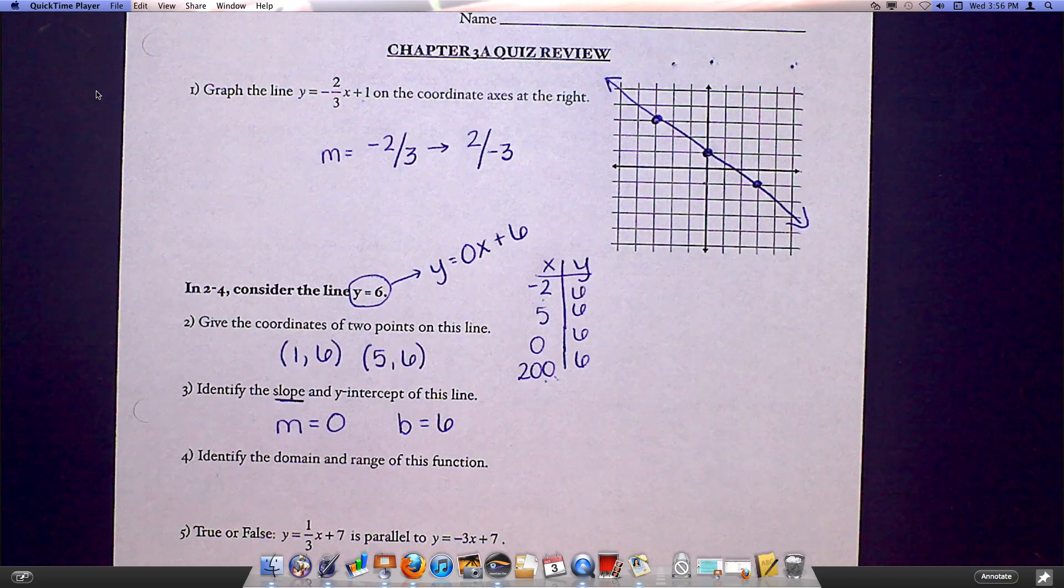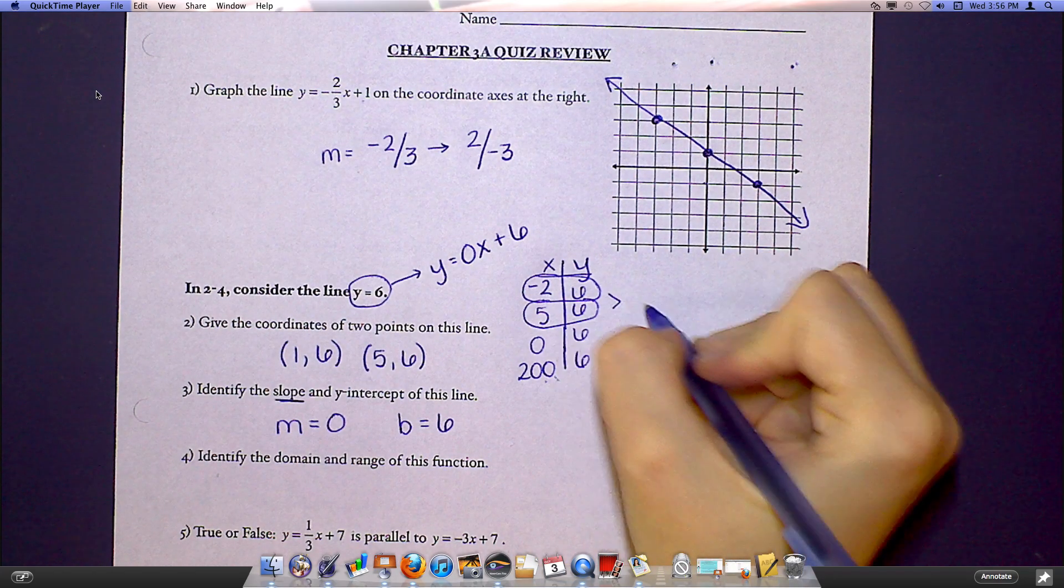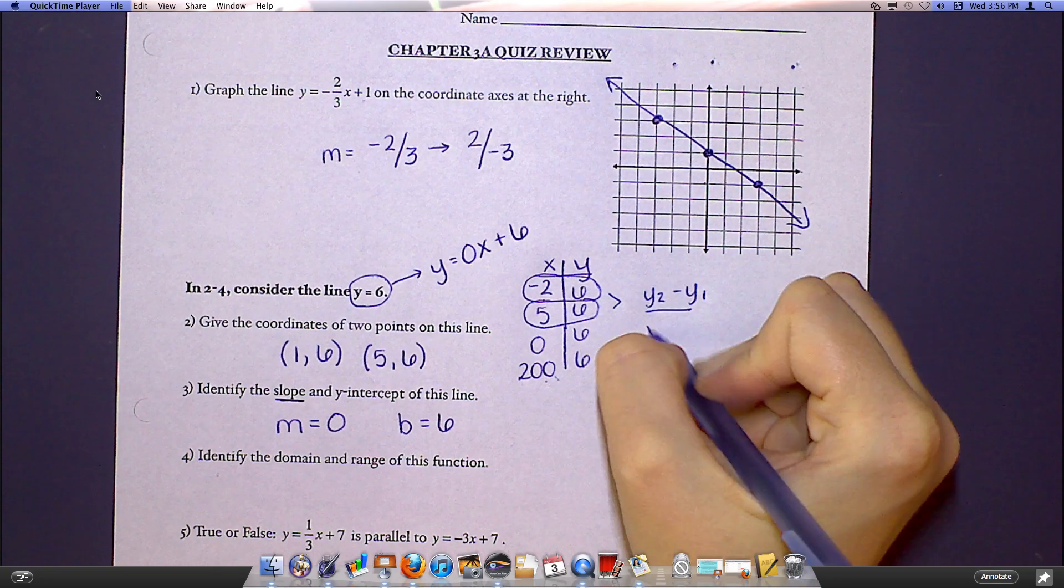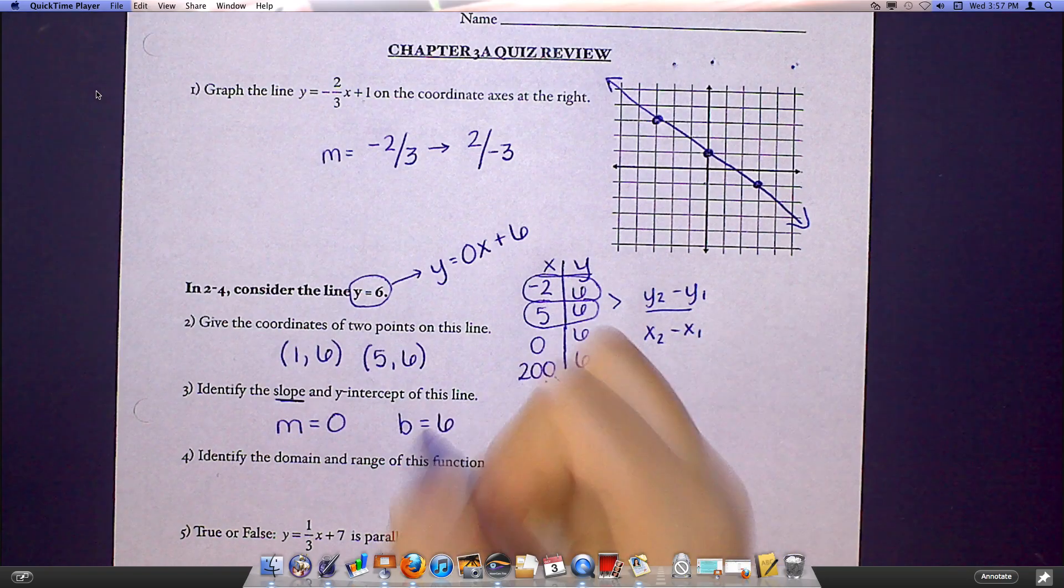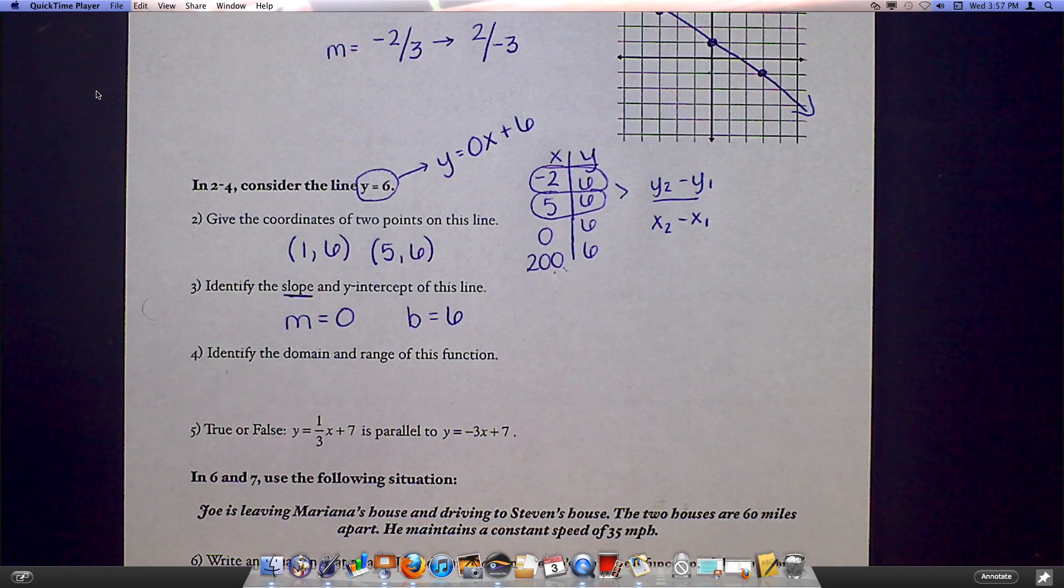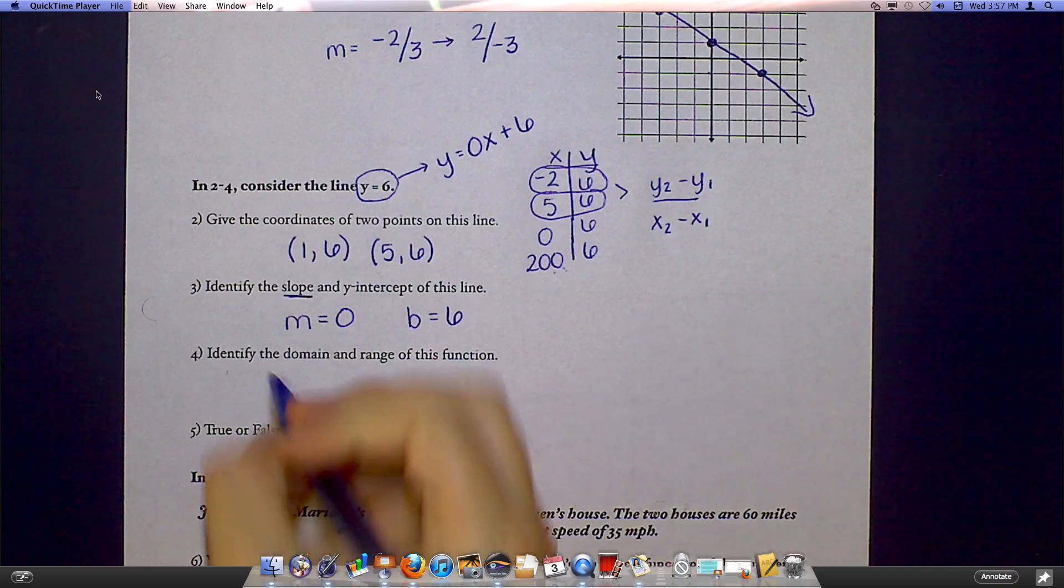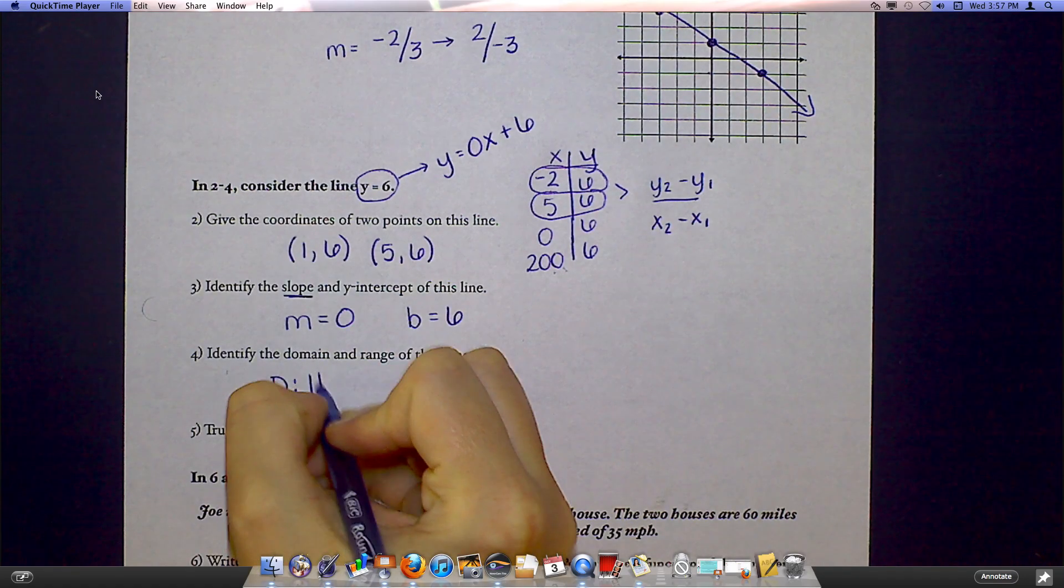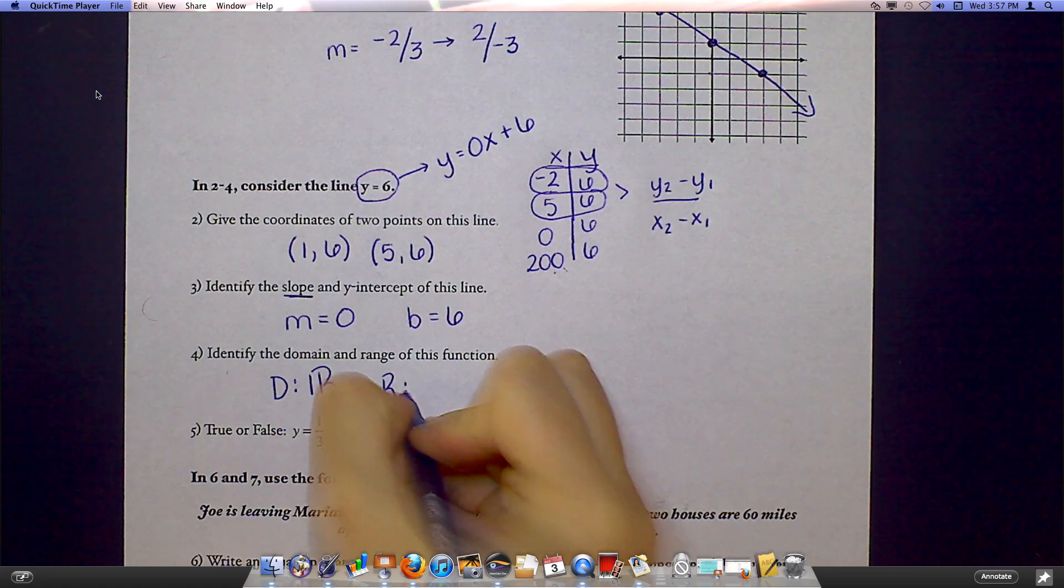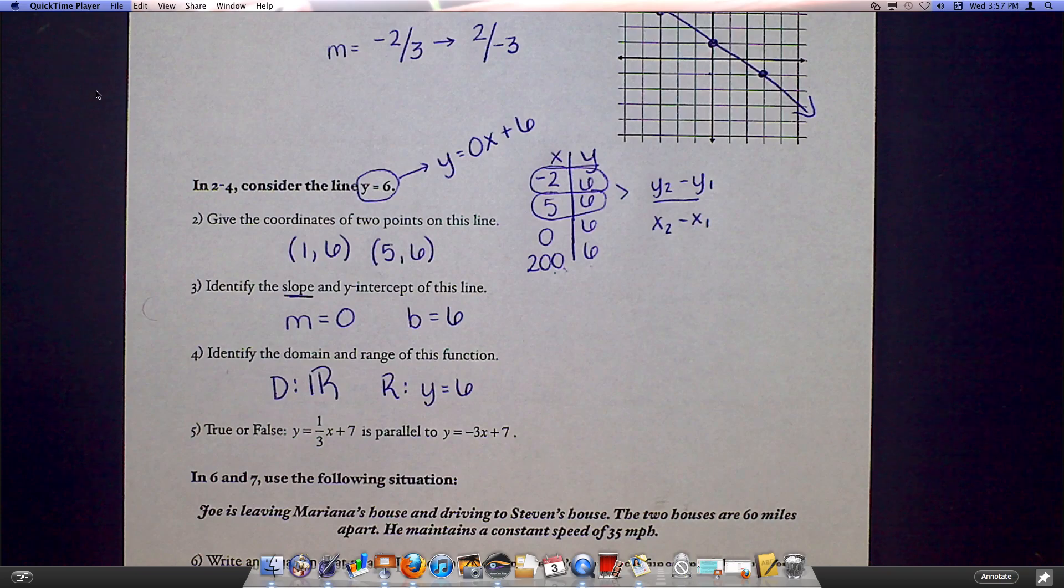And yet another thing you could do if you really wanted to make sure you were right is pick two of these points that we came up with and do y2 minus y1 over x2 minus x1. Now that doesn't help you with your intercept really at all, but it does help you with your slope. Now, domain and range. Everybody's favorite question. Remember, domain is asking what is x allowed to be. Think back to what we did back here in this table. What was x allowed to be? x could be anything. So my domain is anything, all real numbers. My range, however, is what is y allowed to be. And if you look at that table, the only thing y can be is six. So domain is anything, range is just six.